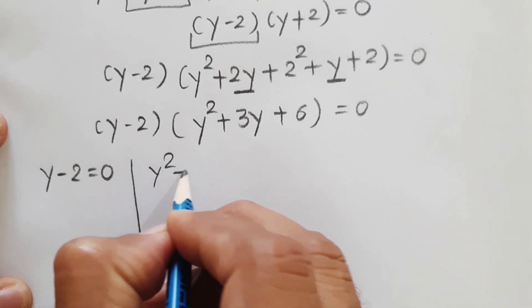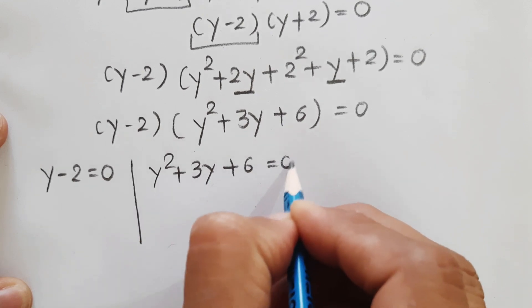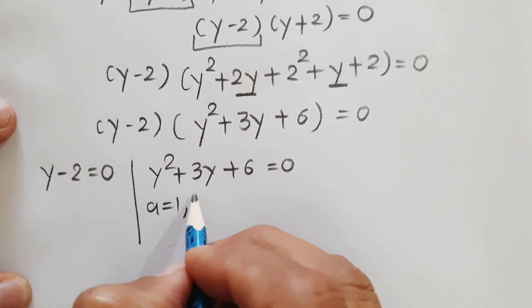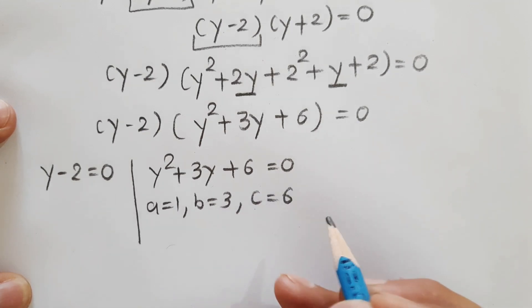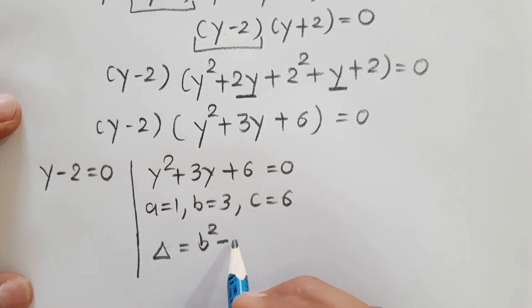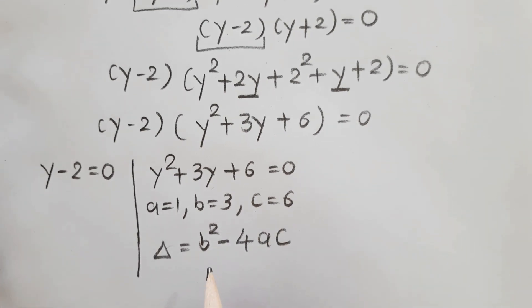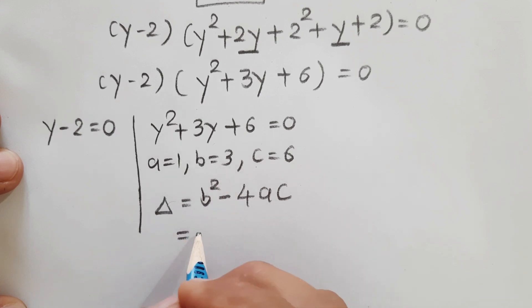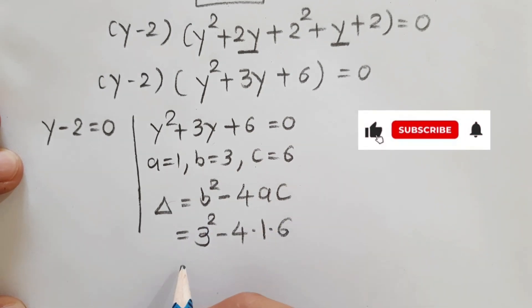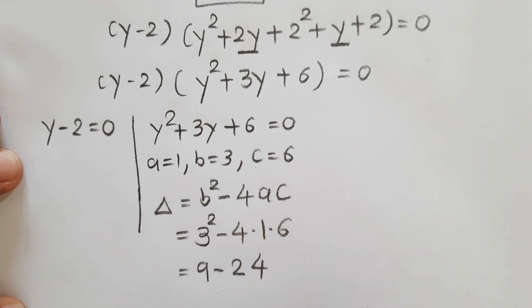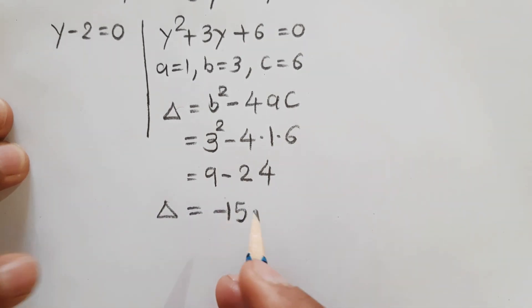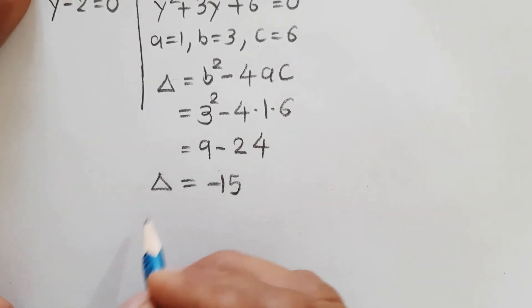Here we can apply the quadratic formula. For the quadratic y² + 3y + 6 = 0, we have a = 1, b = 3, and c = 6. First, let's find the discriminant delta: delta = b² - 4ac = 3² - 4(1)(6) = 9 - 24 = -15.